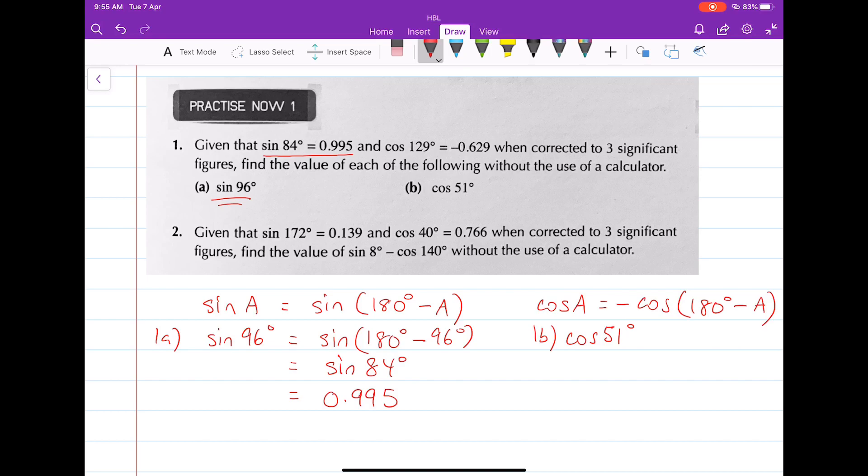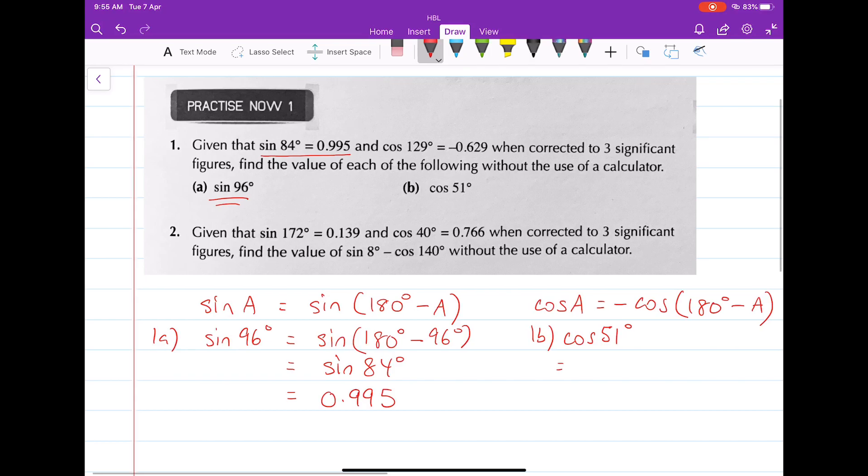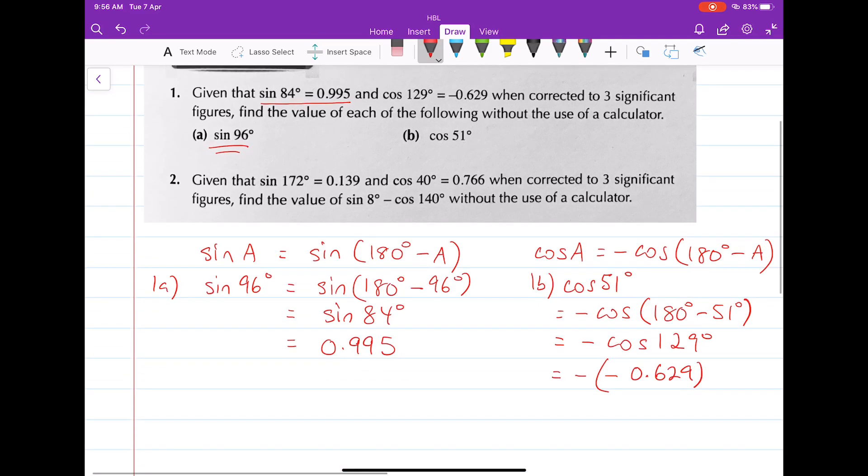The cosine of 51 degrees is actually equal to the negative of the cosine of 180 degrees minus 51, which is equals to minus cosine 129 degrees. And since we have the cosine of 129 degrees, we can just substitute that value in, which is, don't forget there's a minus there, minus 0.629, which is equals to 0.629 once we get rid of those double negatives.